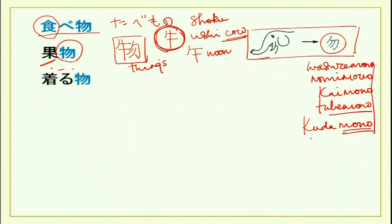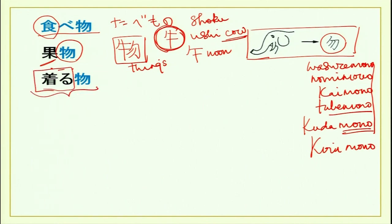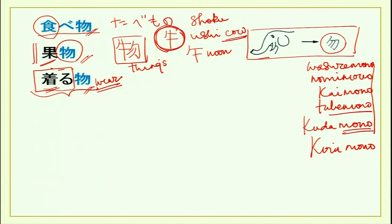There is another word: kiru mono, meaning something that you wear — so clothes is kiru mono. This is the kanji for kiru, which means to wear. We will study that kanji later; today concentrate only on mono.